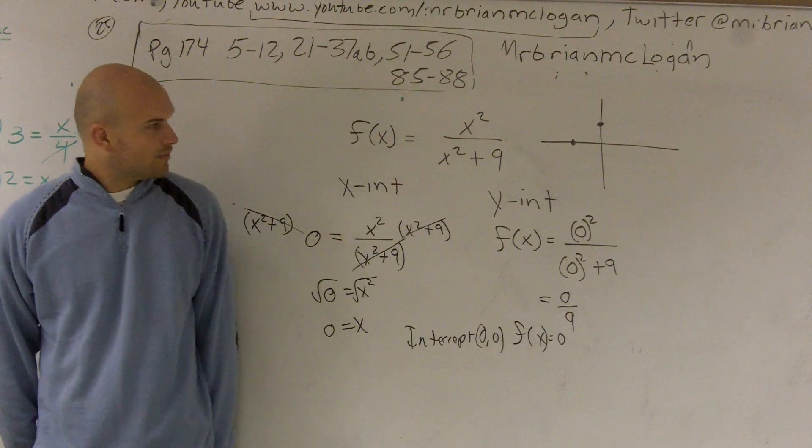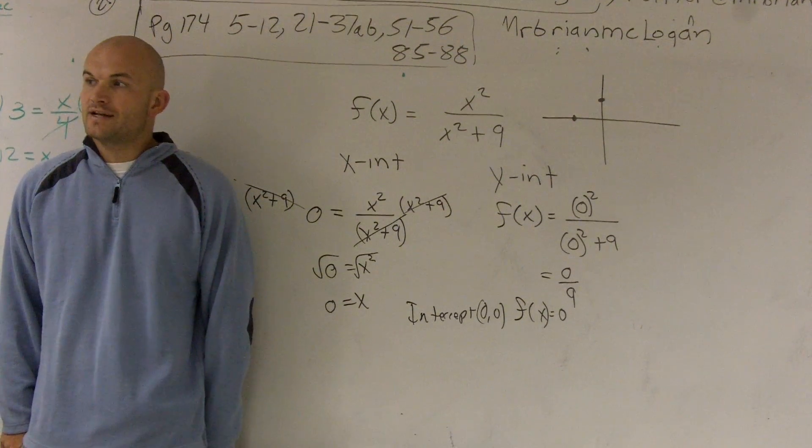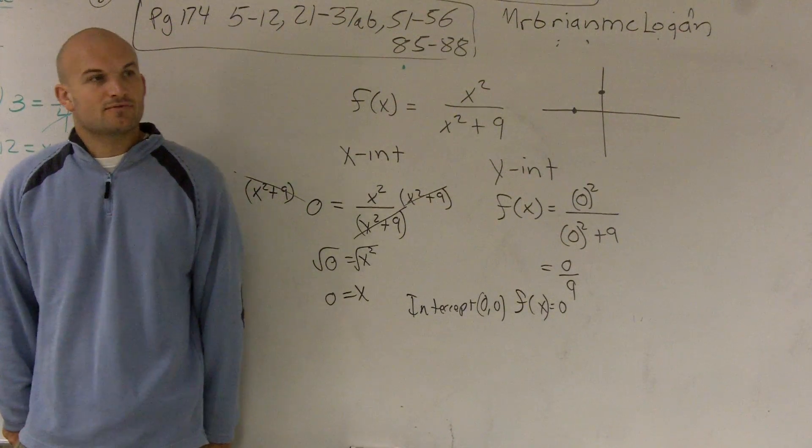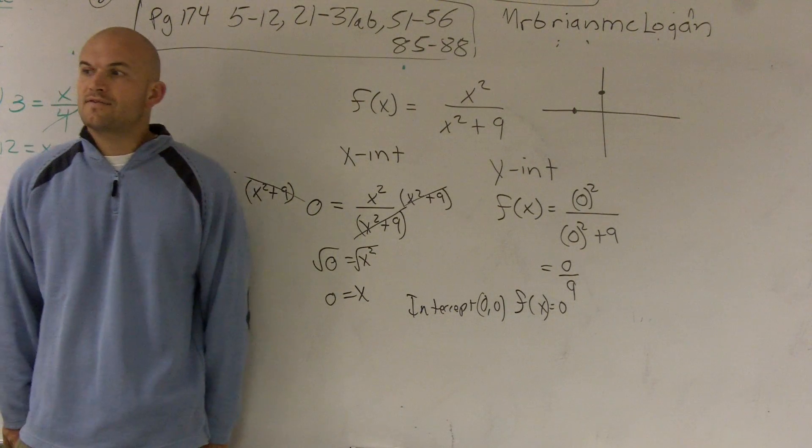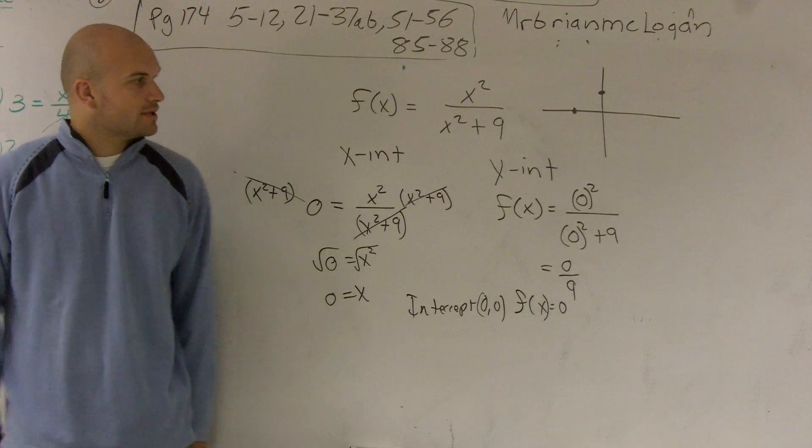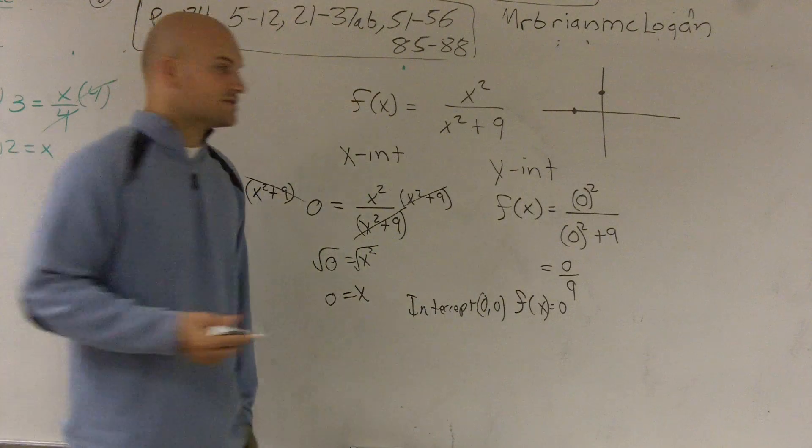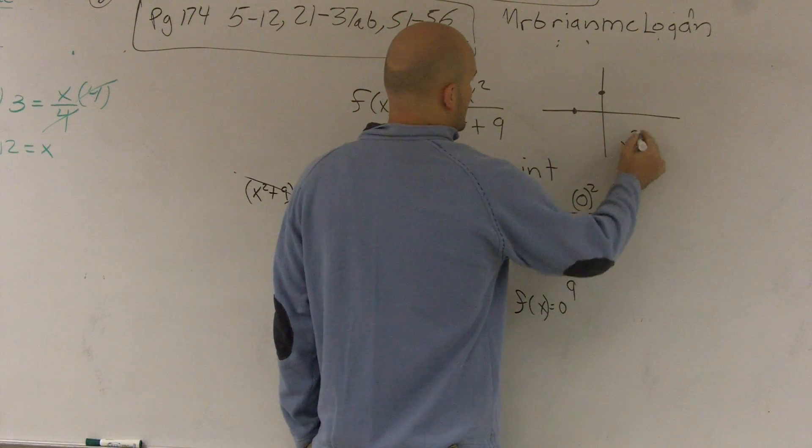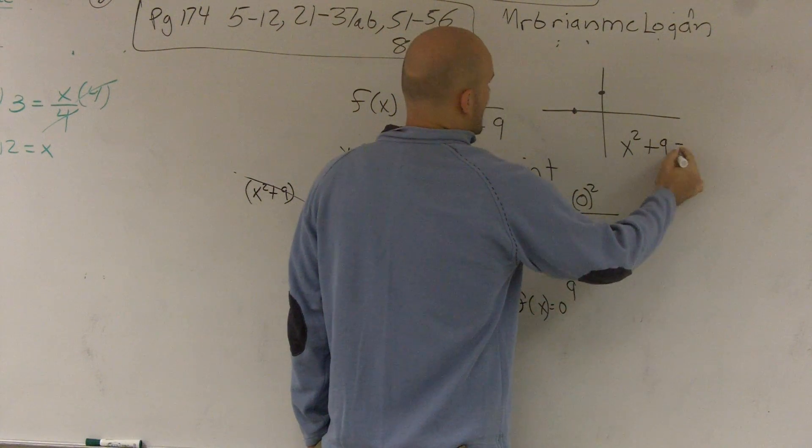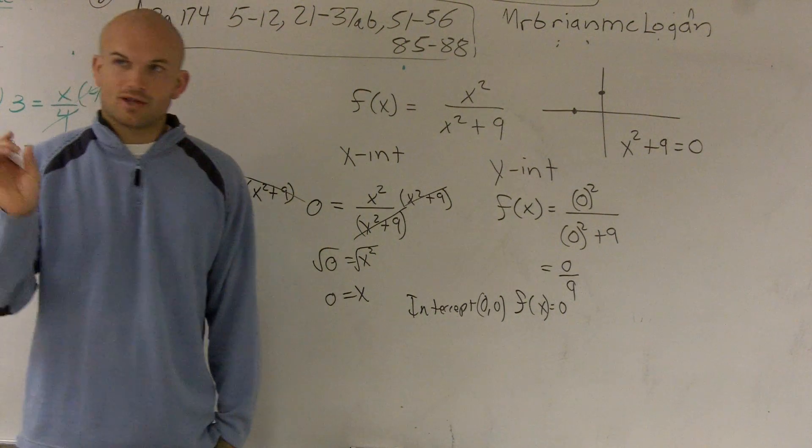Now, the next thing they asked for this problem was to find the domain and to go ahead and find, or find the vertical, I'm sorry, not the domain, but the vertical asymptote and the horizontal asymptote. So remember, to find the vertical asymptote, what we need to do is we need to set our denominator equal to 0. So I say x squared plus 9 equals 0. And this is for your vertical asymptote.